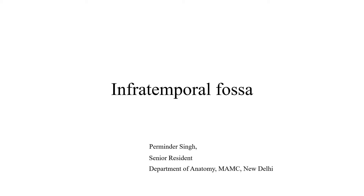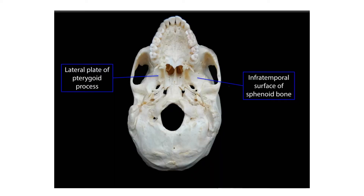Good morning everyone. Today we are going to start with the demonstration of the infratemporal fossa. The infratemporal fossa is the space beneath the base of the skull, between the side walls of the pharynx and the ramus of the mandible. This space communicates with the temporal fossa through a gap deep to the zygomatic arch. It is also referred to as the parapharyngeal space or lateral pharyngeal space.